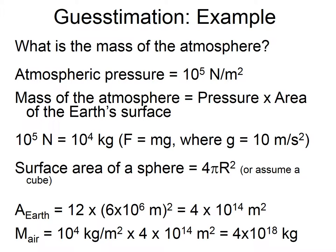How does that compare to our observed change of about 100–200 parts per million since the Industrial Revolution? Our estimate of ~400 ppm is within the same order of magnitude. So guesstimating-wise, we kind of do understand the system — accounting for all the carbon we've burnt roughly explains the CO₂ concentration increase.